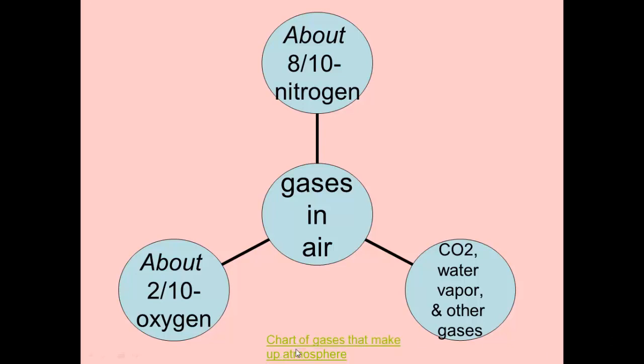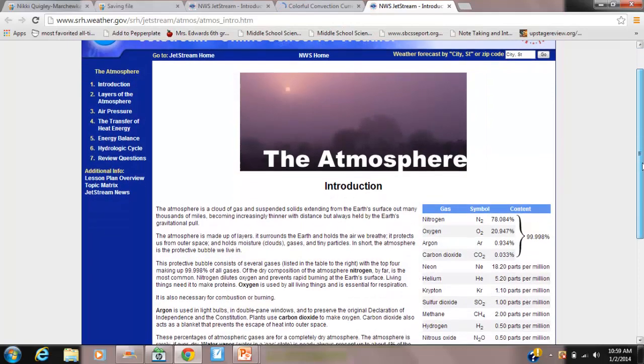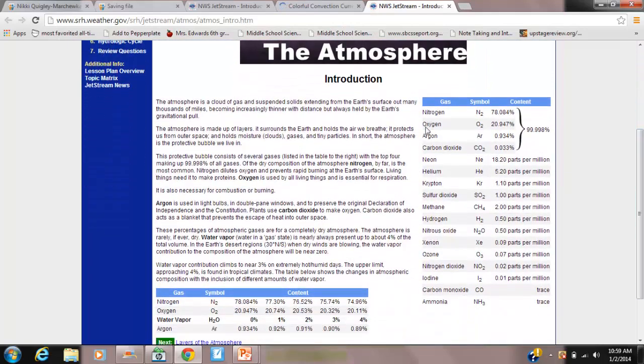Here I am going to show you a chart of all the gases that make up the air. Here is the chart. Mostly nitrogen, as I said about 78%, 20% oxygen, nine tenths argon, and about three hundredths carbon dioxide.